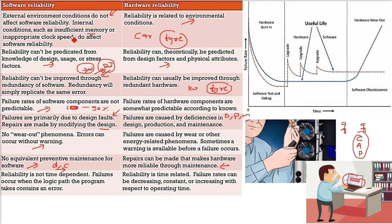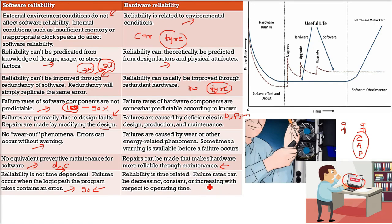In software reliability, reliability is not time dependent. Failure can occur anytime, anywhere — due to a logical path error, a conditional error, some input sensitivity, or a sanity error. But in hardware, reliability is time-related: failure rates can be decreasing, then constant, and then increasing with respect to the operating time, as shown in the bathtub curve graph.